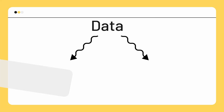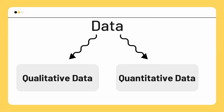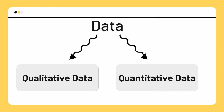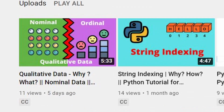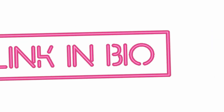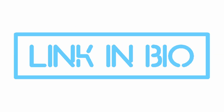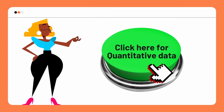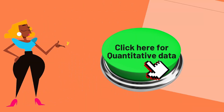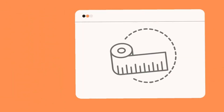In statistics, data can be broadly divided into two parts: qualitative data and quantitative data. We have covered qualitative data in detail in our last video — the link is in the description box. In this video, we will be discussing quantitative data in detail. So let's get started.